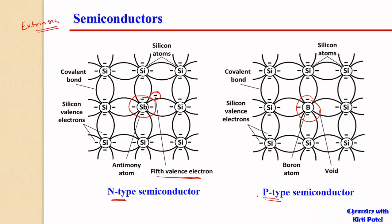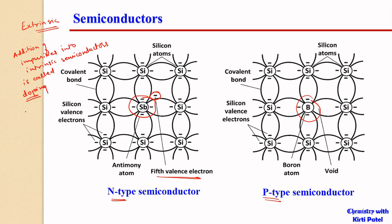The other type is the P-type semiconductor, formed by the addition of trivalent atom impurities into the intrinsic semiconductor. Addition of impurity into an intrinsic semiconductor is called doping. The intrinsic semiconductor which has been added with impurities is called an extrinsic semiconductor or a doped semiconductor.